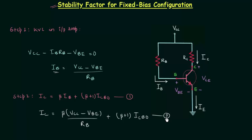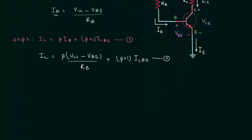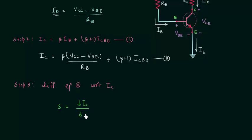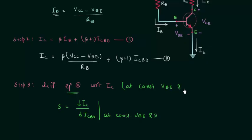In step number three, the final step, we differentiate equation two with respect to IC. We are calculating the stability factor S, which is equal to dIC/dICBO at constant VBE and β. So we need to differentiate equation two with respect to ICBO at constant VBE and β. This is the most important step.